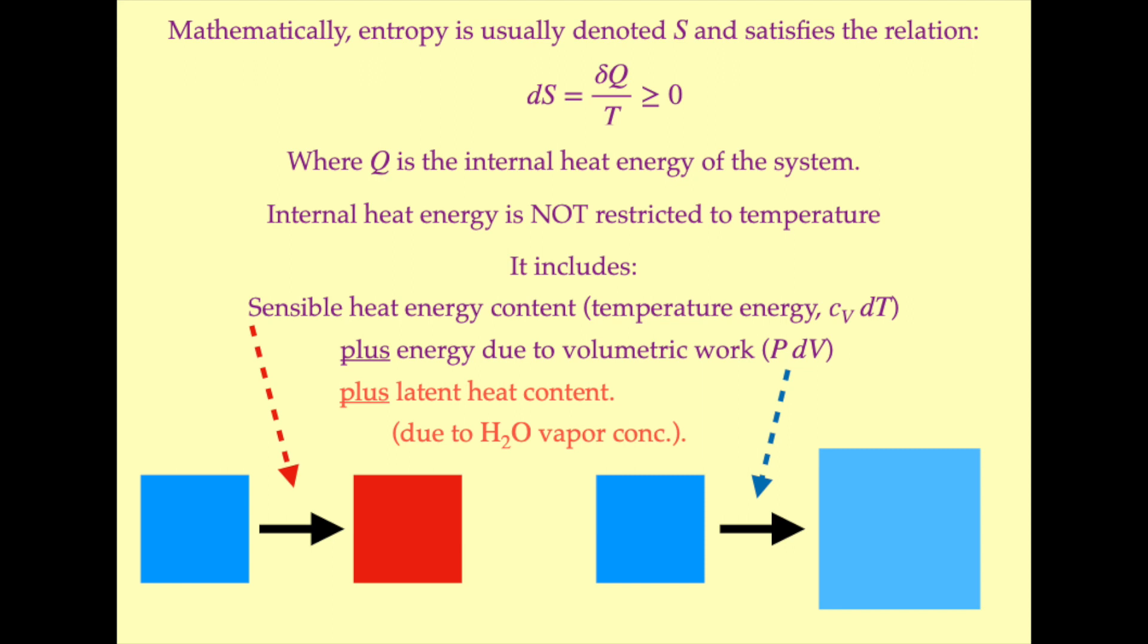The second law of thermodynamics then says that dS is always greater than or equal to zero. The symbol Q stands for the total internal heat energy of the system, but this name is a little bit misleading. We normally think of heat and temperature as being the same thing. But in thermodynamics, that's not the case.